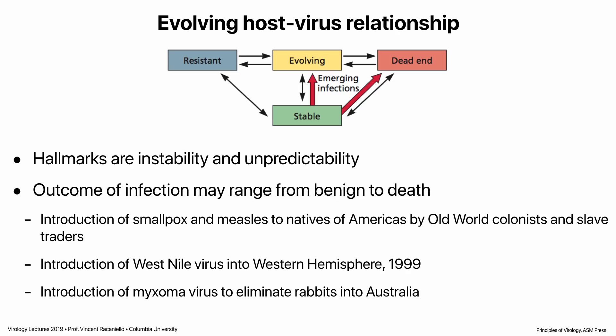In evolving host-virus relationships, a virus enters a new host it hasn't encountered before, and it may replicate and begin to transmit. Initially there's a lot of instability and unpredictability. Outcomes can range from benign to lethal. A great example is the introduction of smallpox and measles to American natives by Old World colonists — those viruses emerged in the Middle East, and the completely naive populations in the Americas were devastated. Similarly, introduction of myxoma virus to rabbits that had never seen it was nearly 100% lethal.